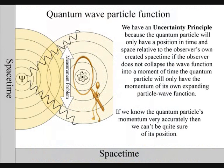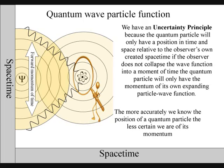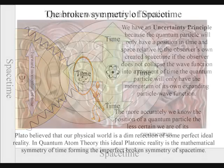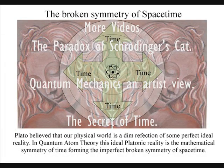Therefore, the more accurately we know the position of a quantum particle, the less certain we are of its momentum. And if we know its momentum very accurately, then we can't be quite sure of where it is.